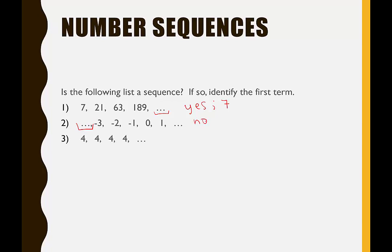Example 3: 4, 4, 4, 4, dot dot dot. It starts here at 4, it goes on, so yes this is a sequence, a very boring sequence, and the first term is 4.